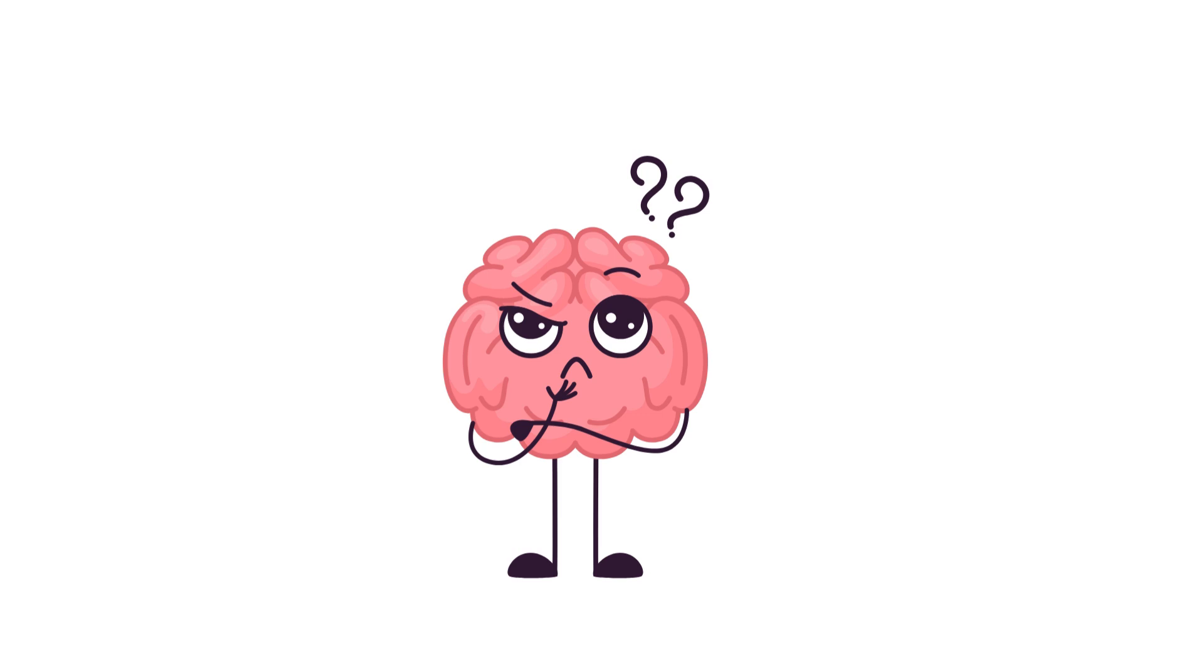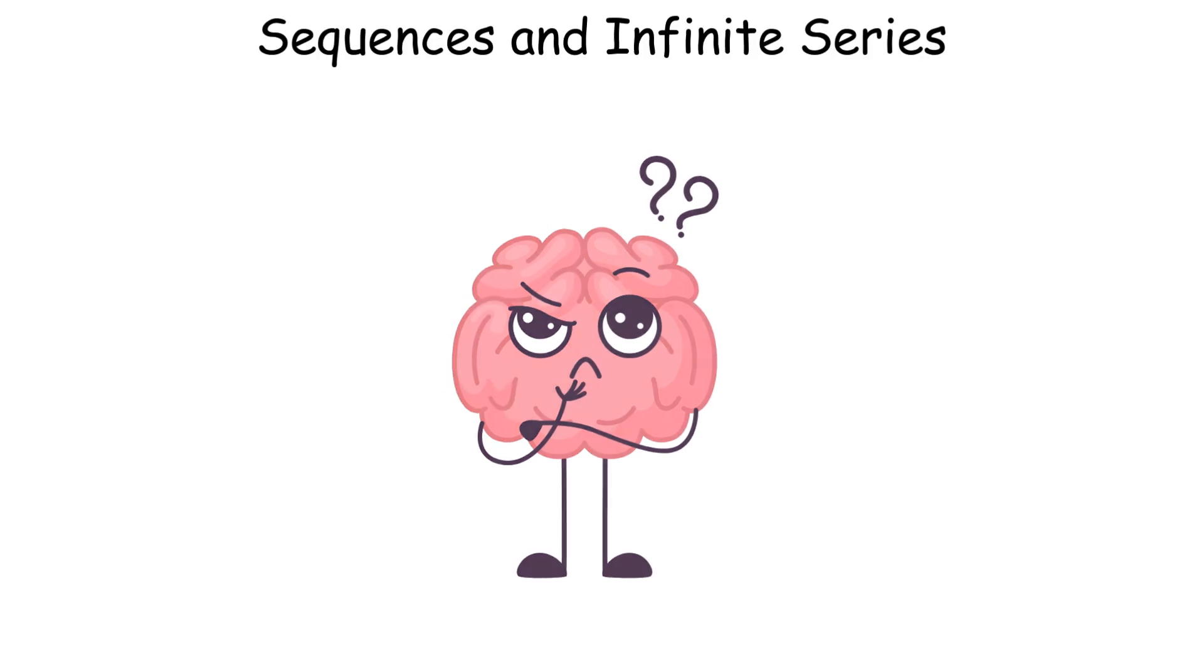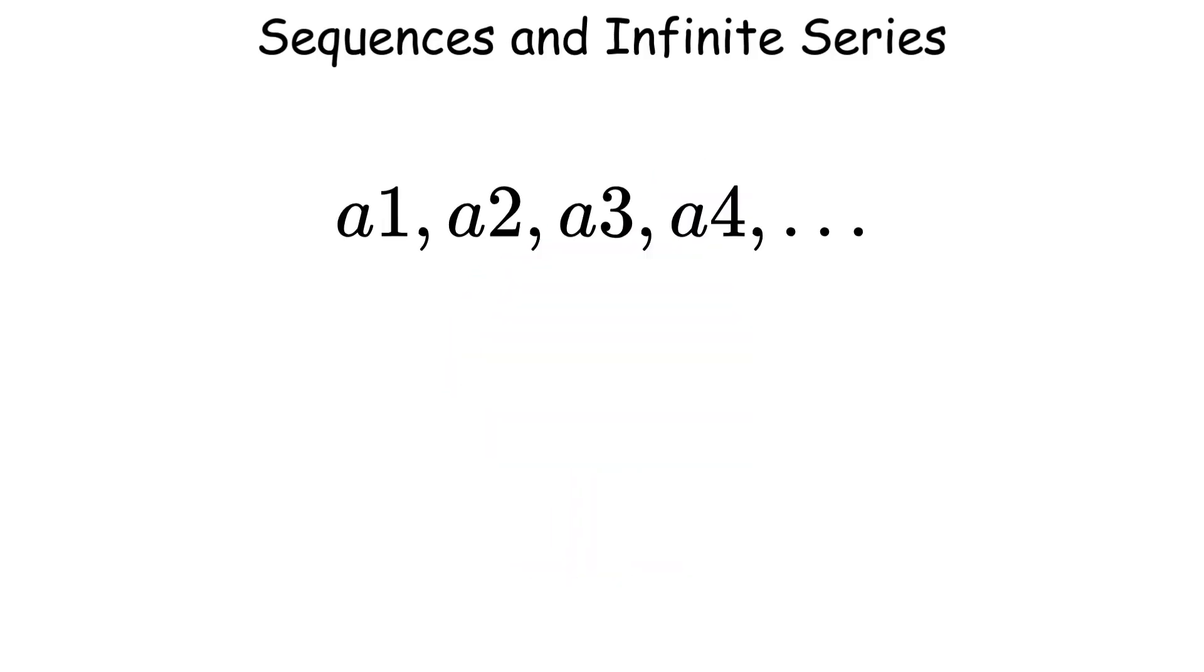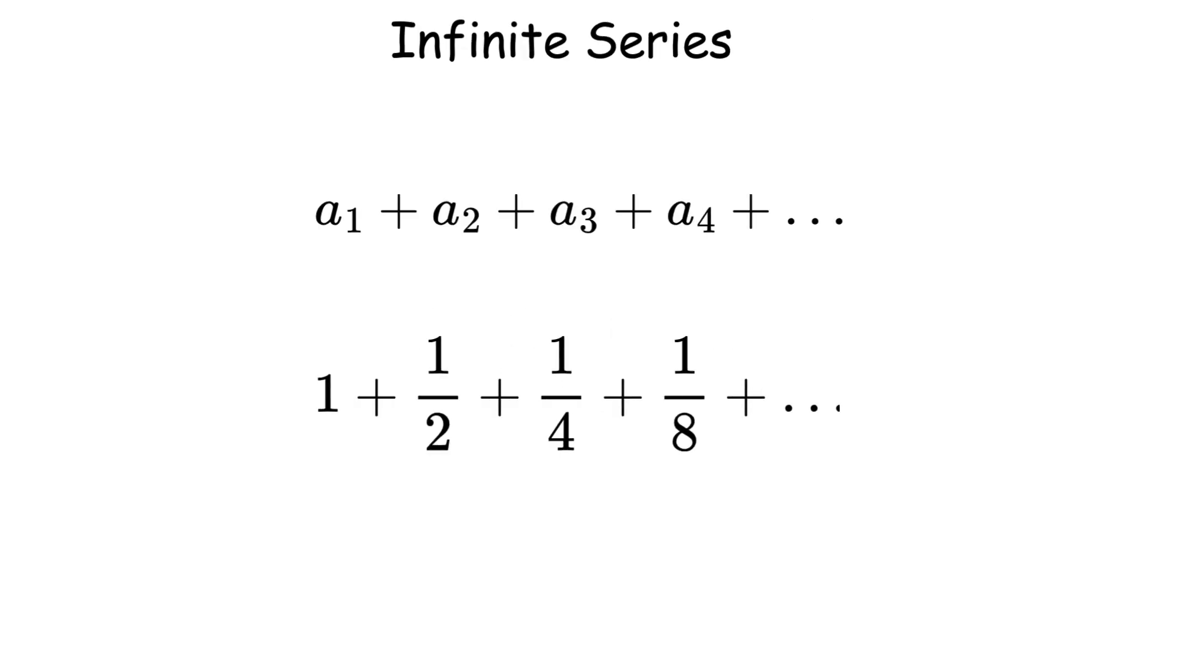And when we can't find exact solutions, we use sequences and infinite series. A sequence is just an ordered list of numbers, like 1, 1 over 2, 1 over 4, 1 over 8, and so on. An infinite series is what happens when you add up all the terms of a sequence: the sum from n equals 1 to infinity of a sub n.